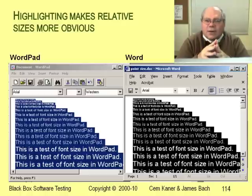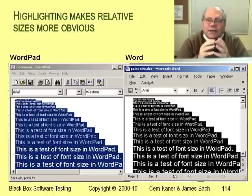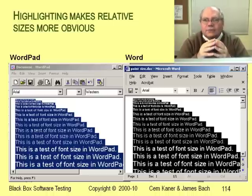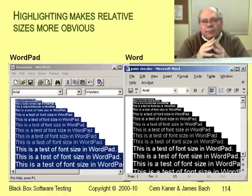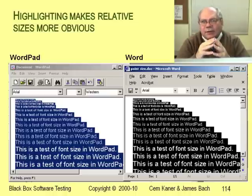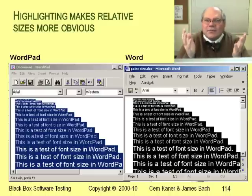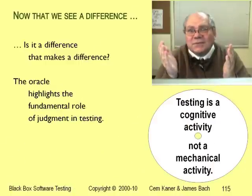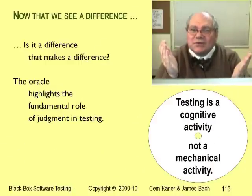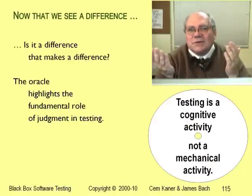Side-by-side comparisons with a reference program go a long way toward that goal. In this case, we see that just like OpenOffice, WordPad doesn't handle differences in size consistently. It's more subtle than OpenOffice's problem, but if you look at the top six lines of the WordPad display, the third and the fourth line are about the same size, but they shouldn't be. Word appears to size the fonts correctly; WordPad and OpenOffice obviously don't.